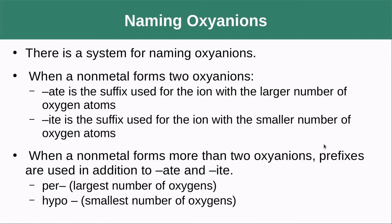There's a system for naming oxy anions — polyatomics containing oxygen. When a non-metal forms two oxy anions, '-ate' is the suffix for the ion with more oxygens and '-ite' for fewer. When more than two oxy ions exist, prefixes are used: 'per-' with '-ate', then '-ate', then '-ite', then 'hypo-' with '-ite'. An example: perchlorate, chlorate, chlorite, hypochlorite.